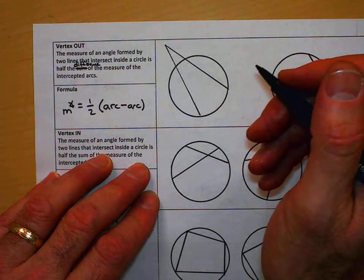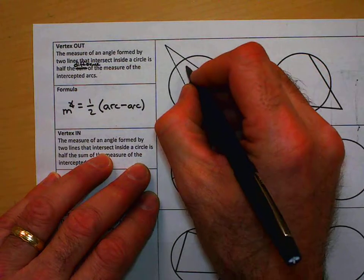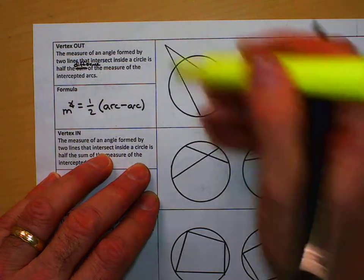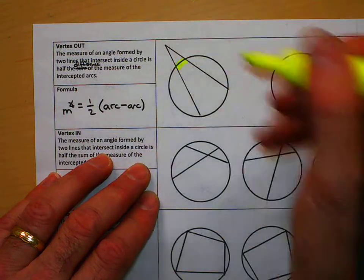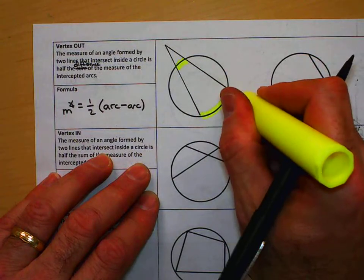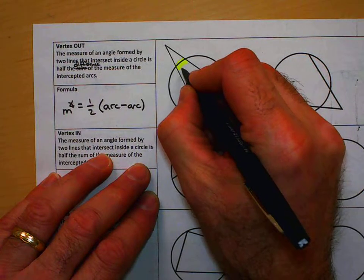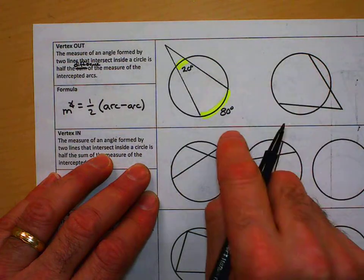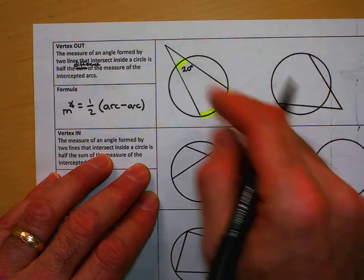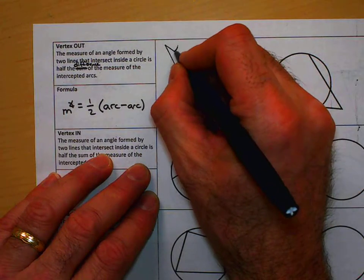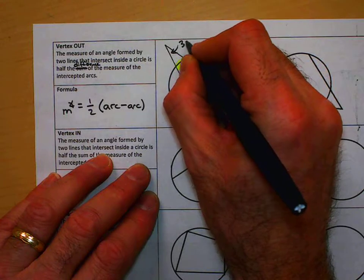So with that in mind, if they gave me these two arc measures—if they gave me this to be 20 and this to be 80, let's write those in. If this is 80 and this is 20, then I take the difference and take half of it. 80 minus 20 is 60, half of that. That means this angle must be 30 degrees.